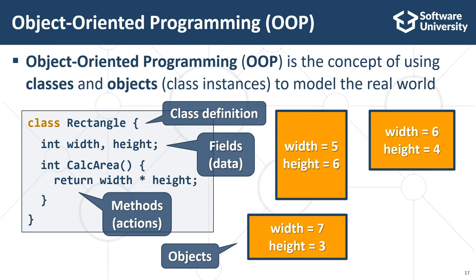Objects and classes are the building blocks of object-oriented programming. They come together with some other OOP concepts, like abstraction, interfaces, data encapsulation, inheritance, polymorphism, and exception handling.